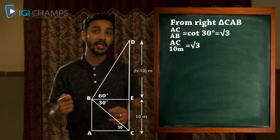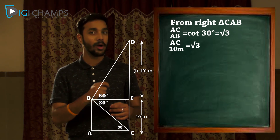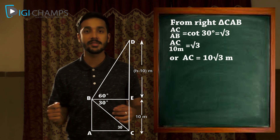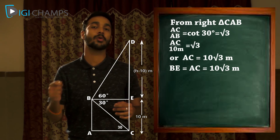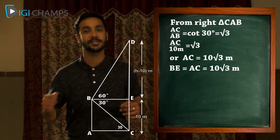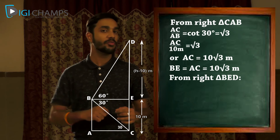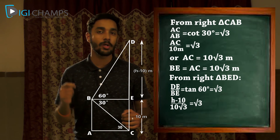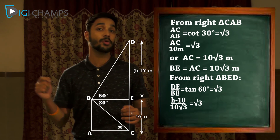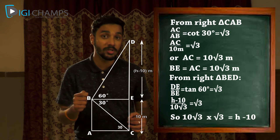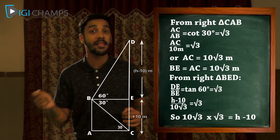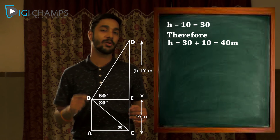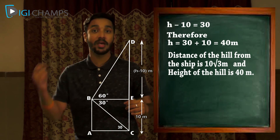From right triangle CAB: cot 30° = AC/AB, so √3 = AC/10, giving AC = 10√3 meters. Therefore BE = AC = 10√3 meters. In right triangle BED: tan 60° = DE/BE, so √3 = (H−10)/(10√3). Then 10√3 × √3 = H − 10, so 30 = H − 10, giving H = 40 meters. The distance of the hill from the ship is 10√3 meters and the height of the hill is 40 meters.